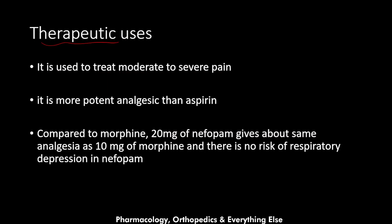Regarding therapeutic uses, nefopam is used to treat moderate to severe pain, making it a pretty potent analgesic medication. Compared to paracetamol, which is used for mild to moderate pain, nefopam is used for moderate to severe pain. It is more potent than aspirin, and compared to morphine, 20 milligrams of nefopam gives about the same analgesia as 10 milligrams of morphine — meaning morphine is about twice as strong. There is no risk of respiratory depression with nefopam, which is an advantage over morphine.